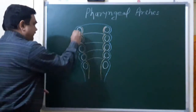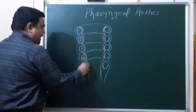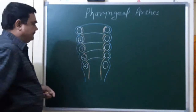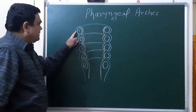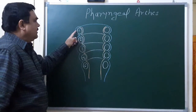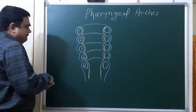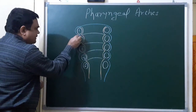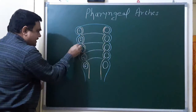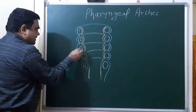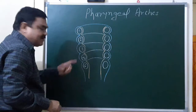The pharyngeal arches are numbered: first, second, third, fourth, and sixth arch. They are internally lined by endoderm and externally by ectoderm. Between two adjacent arches, a series of grooves are present.